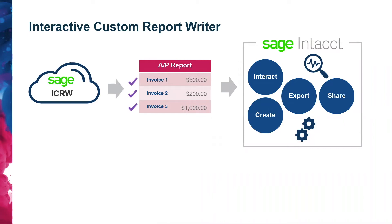As users build reports, they can drag and drop information, sort and filter it, apply special formatting, and otherwise tailor it to their liking — similar to what you might be used to doing in a spreadsheet, but within Sage Intacct, so it uses the same login as your accounting and operations and it's using your real-time Sage Intacct data. This in turn will streamline the reporting process for you and your team, and reduce the need for spreadsheets or other reporting tools.